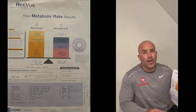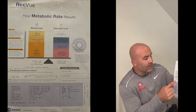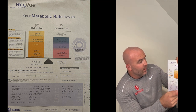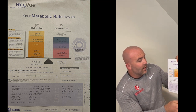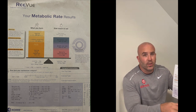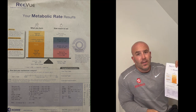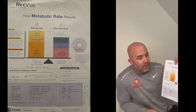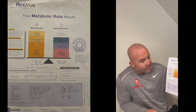When we're looking at this sheet, our resting metabolic rate test is going to be this number in the orange box — it's labeled resting energy expenditure. That's going to be the number we focus on today.